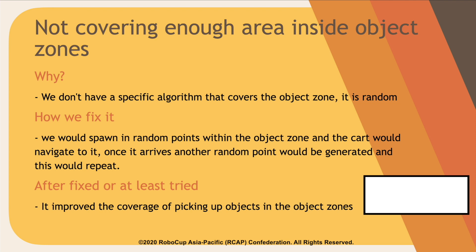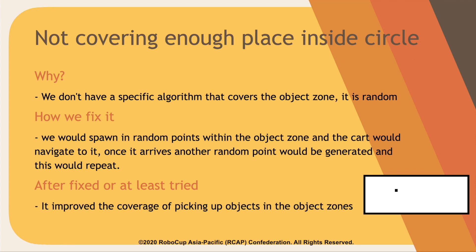How we fixed it is by spawning random points within the object zone for the cart to navigate to. Once it arrives at the point, another random point is generated, and the cart goes to that point — and that repeats. This way, the cart navigates to almost every corner of the object zone.